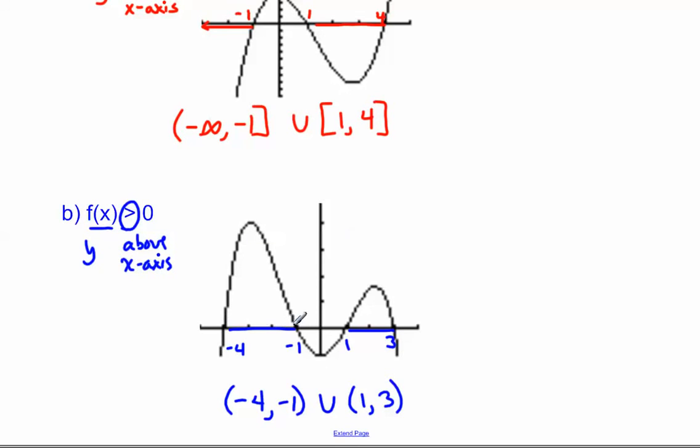And that's this section from negative 4 to negative 1, and 1 to 3, this little section here. This time we use parentheses and not brackets because we're not including, it's not an or equals to.